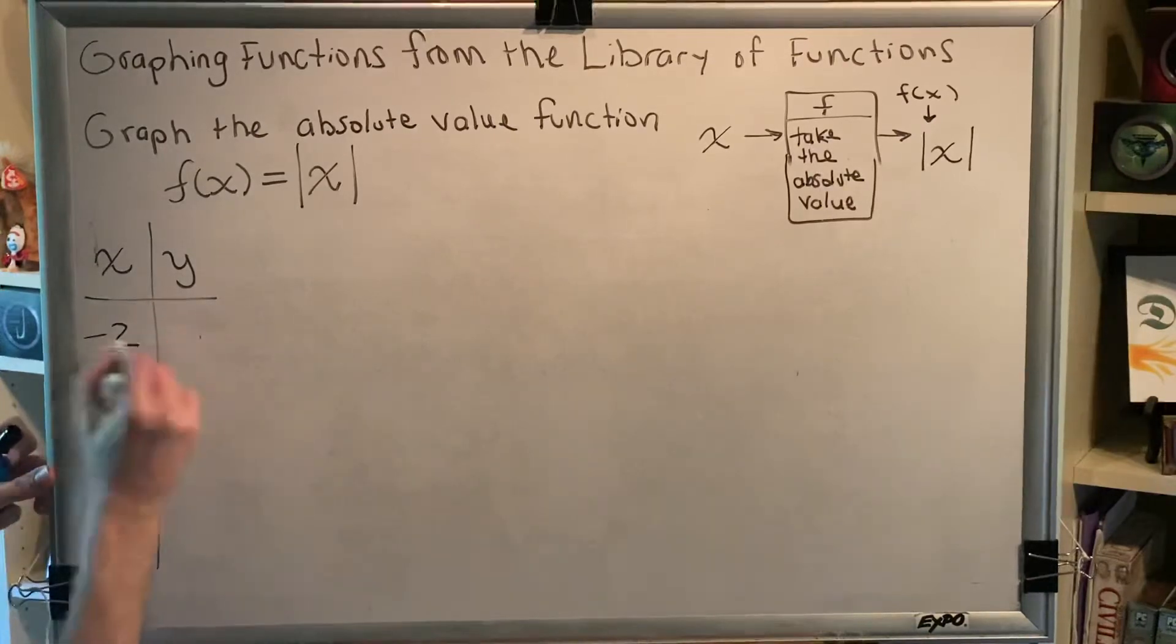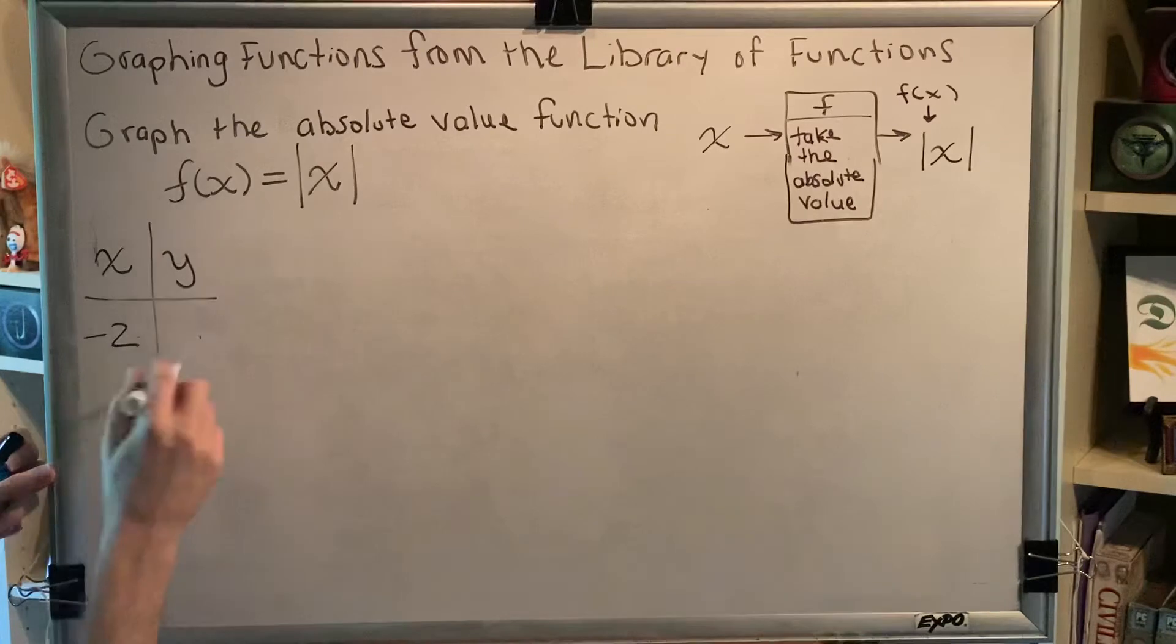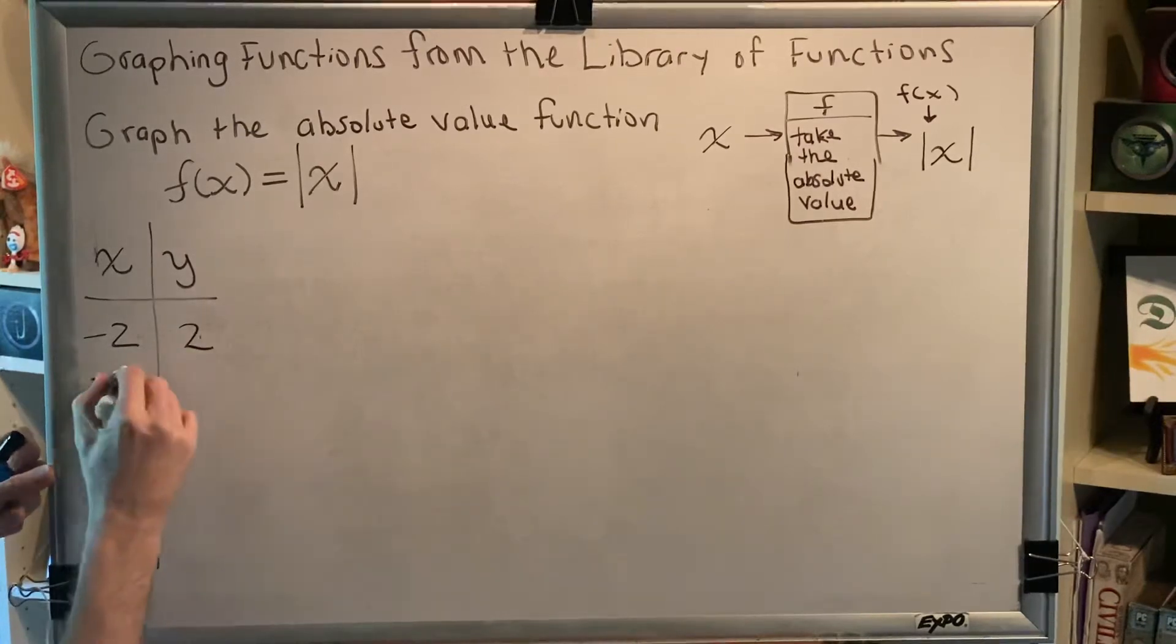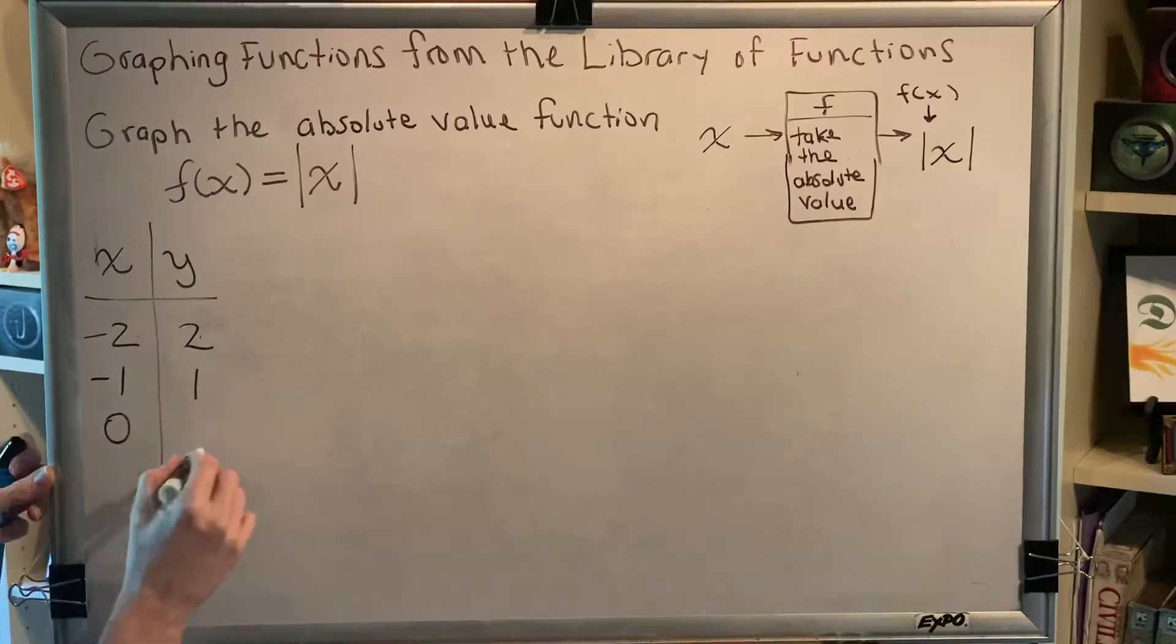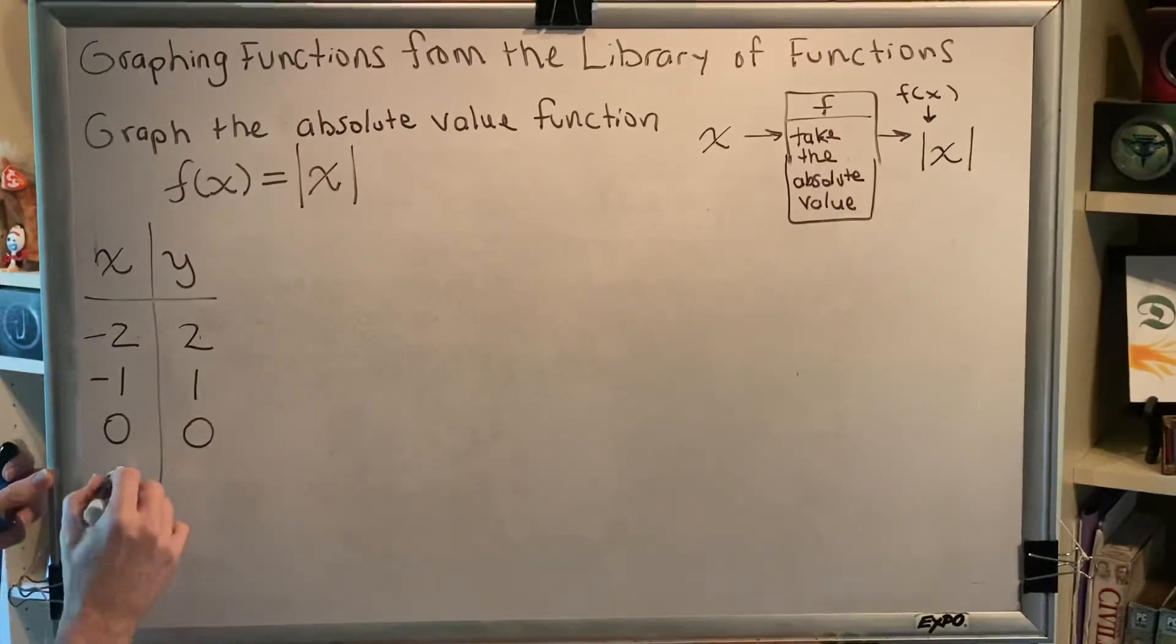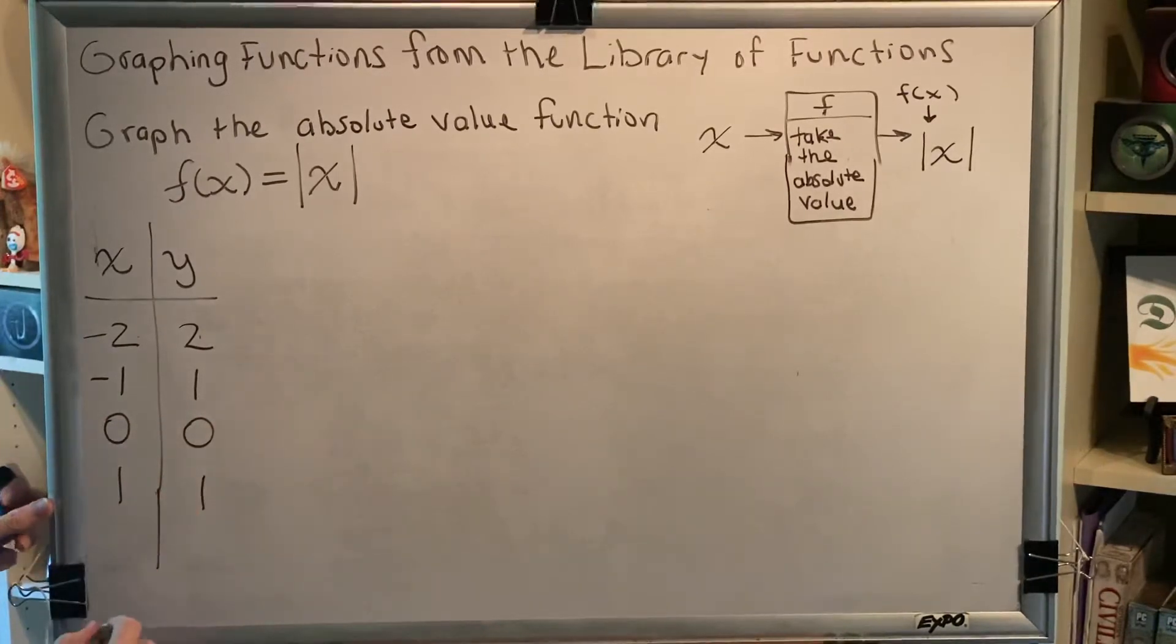Whatever x is, y is just the absolute value of that number. So the absolute value of negative 2 is positive 2. The absolute value of negative 1 is positive 1. The absolute value of 0 is 0. The absolute value of 1 is 1. The absolute value of 2 is 2.